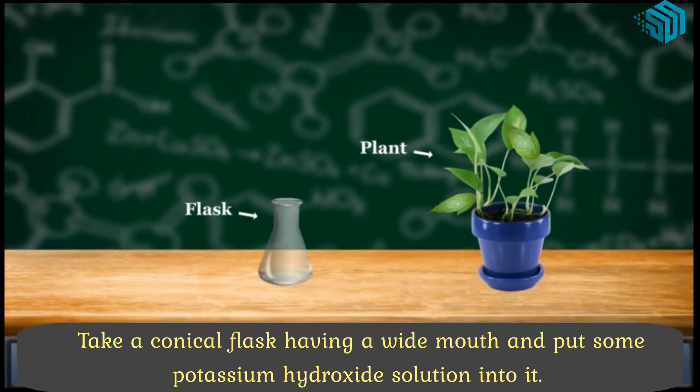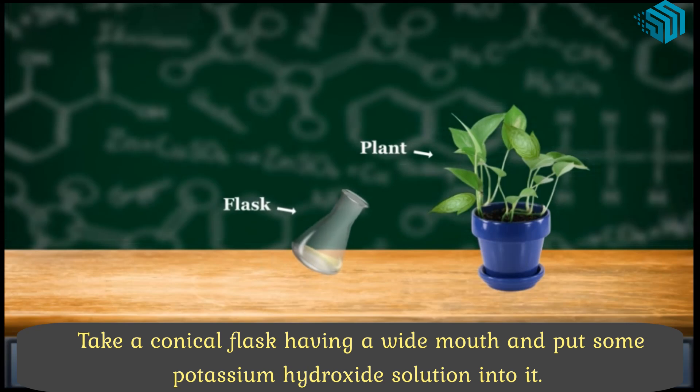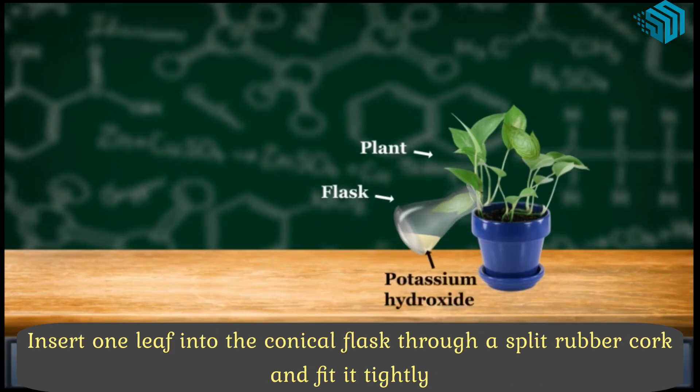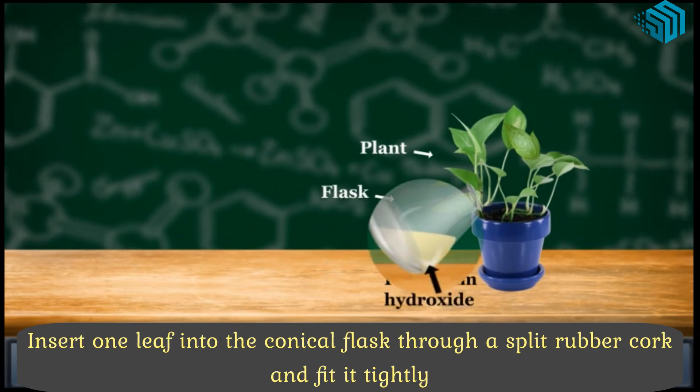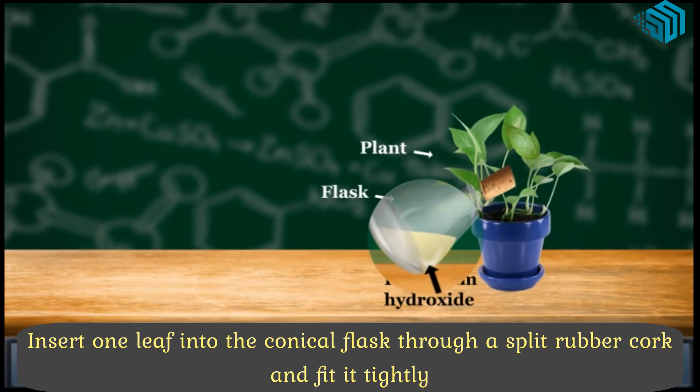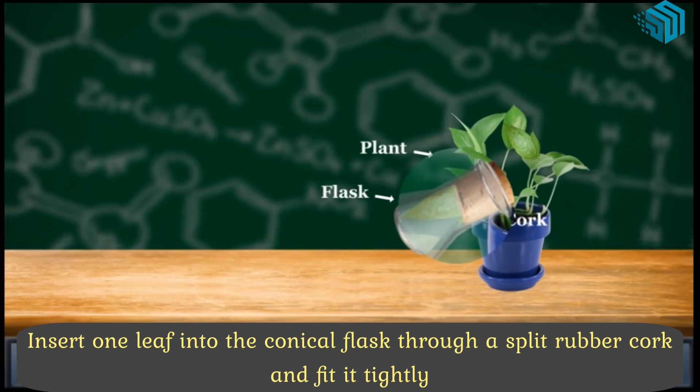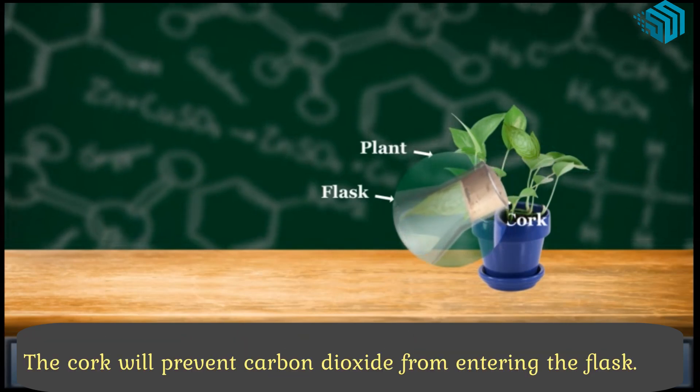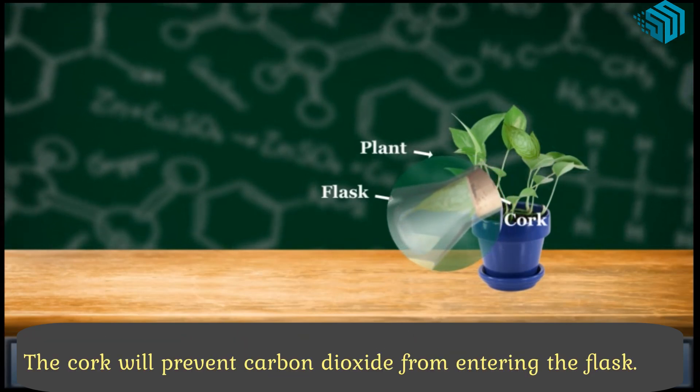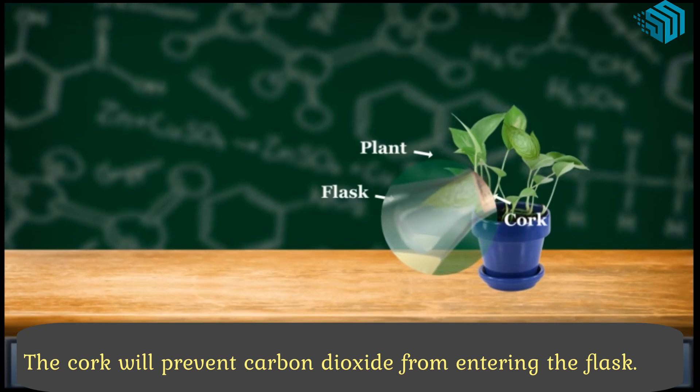Take a conical flask having a wide mouth and put some potassium hydroxide solution into it. Insert one leaf into the conical flask through a split rubber cork and fit it tightly. The cork will prevent carbon dioxide from entering the flask.